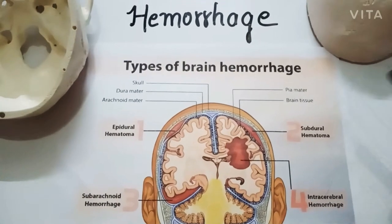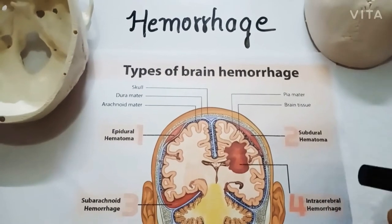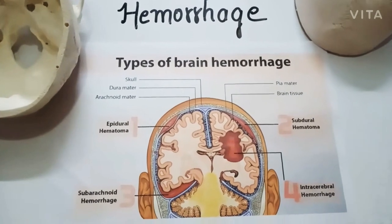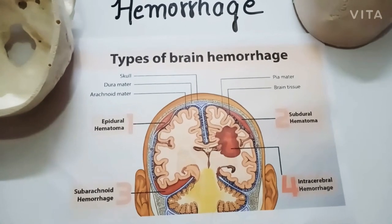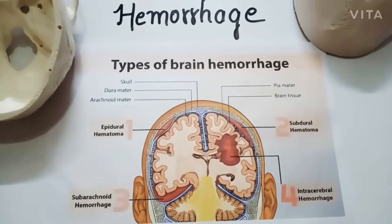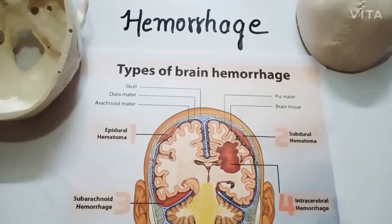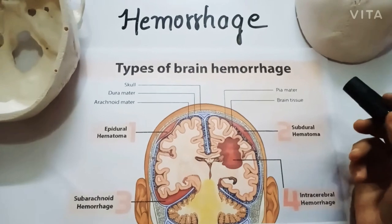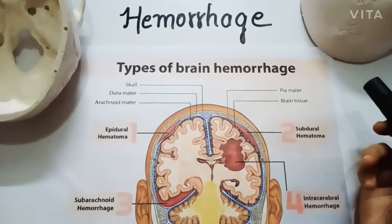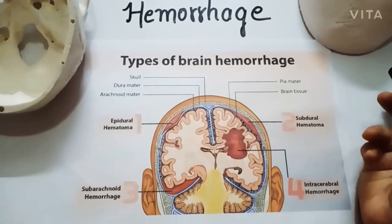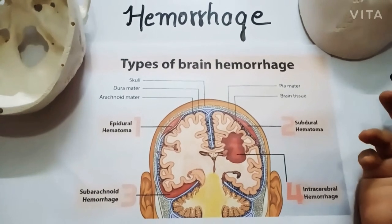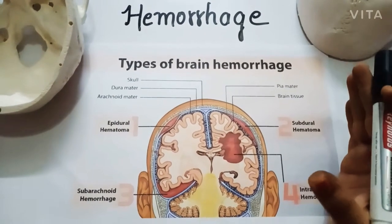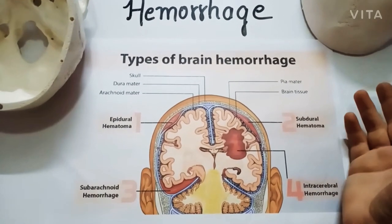Today we are going to study brain hemorrhage. This word, when you hear it, is very significant — this situation is life threatening, undoubtedly. In films, they show that it is brain hemorrhage and eventually the person dies. But actually, brain hemorrhage is a life threatening situation in real life as well.